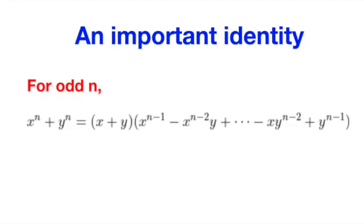First of all, I would like to introduce this wonderful identity. Given an odd positive integer n, x power n plus y power n can be factorized, with x plus y as a first factor. The full formula is given on the screen.